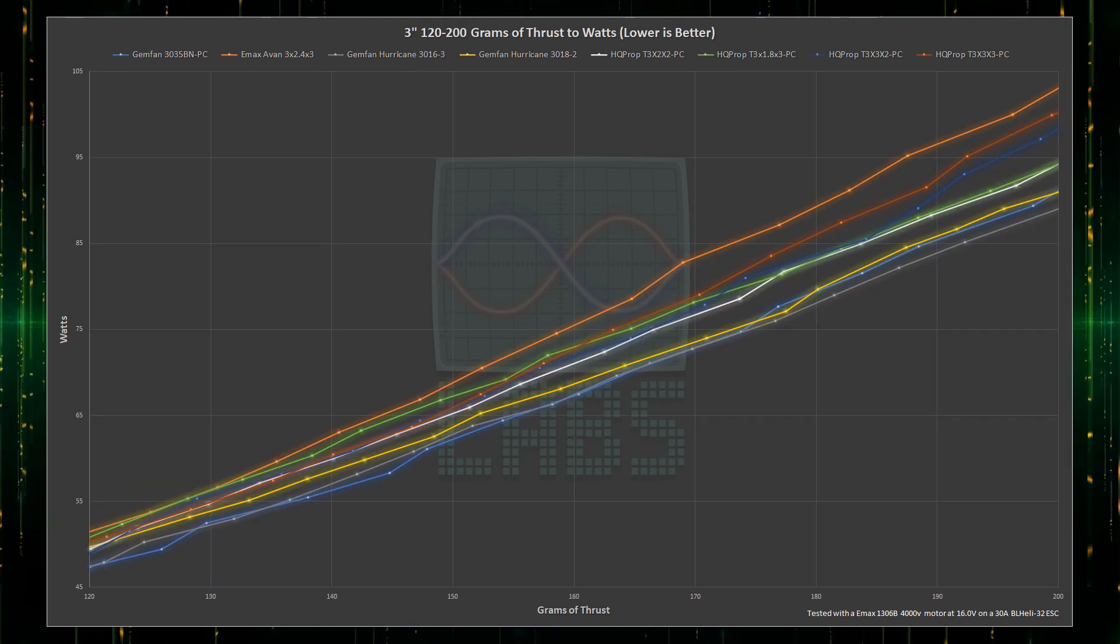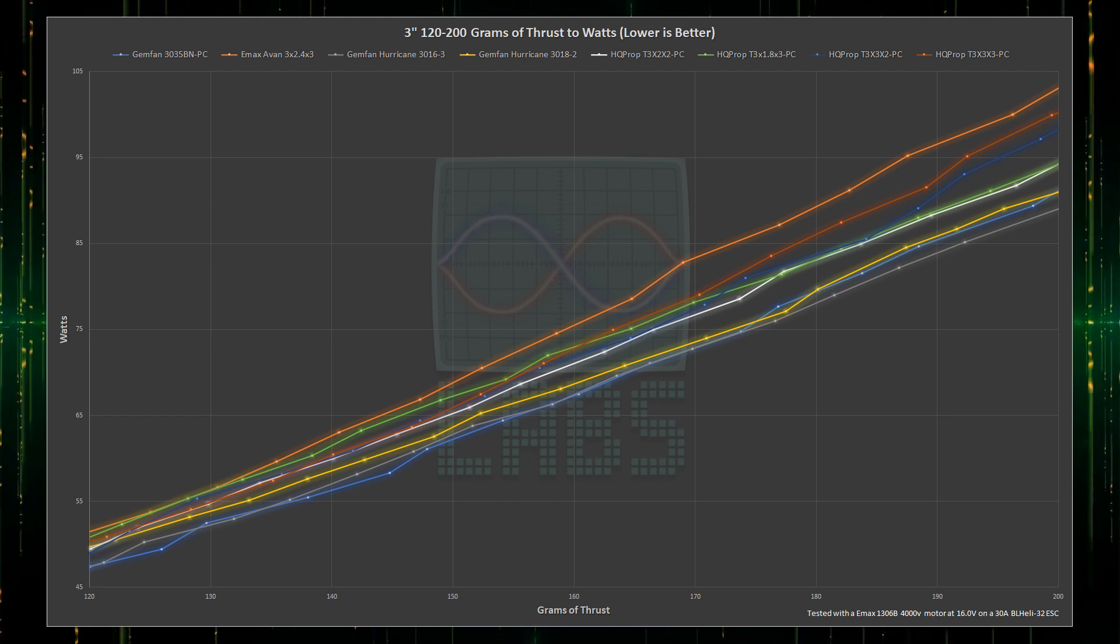Looking at the next 80 grams of thrust, the Emax AVAN 3-blade 2.4-inch pitch propeller and still leading of the pair, the HQ prop 3-blade 3-inch pitch propeller continue to dip in efficiency. The Gemfan 3-blade 3.5-inch pitch propeller starts to decline in efficiency slightly at around 175 grams of thrust where the Gemfan 3-blade 1.6-inch pitch propeller takes the efficiency lead above 180 grams of thrust.